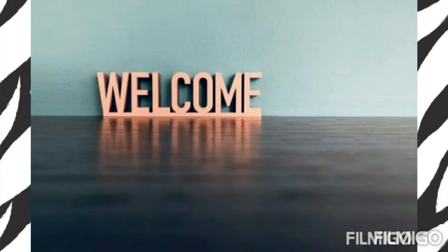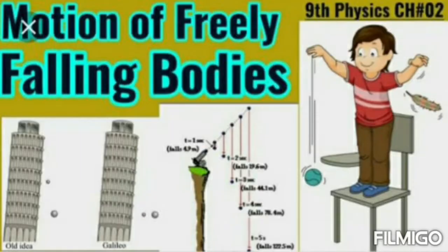Good morning students. Welcome to Physics Online Plan. Last class we learned about equations of motion — 3 equations. The first equation: V equal to U plus AT. Second equation: S equal to UT plus half AT square. Third equation: V square equal to U square plus 2AS. We derived these equations and I think almost all students know them.